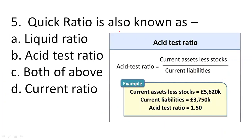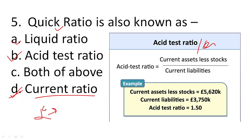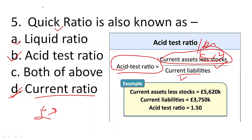Question five: quick ratio is also known as what? We have three liquidity ratios. One is the current ratio — current assets divided by current liabilities. The quick ratio, also known as the acid test ratio, is another liquidity ratio. For this, the formula is current assets less inventory divided by current liabilities. So option C is the right answer — quick ratio can also be known as liquid ratio and acid test ratio.